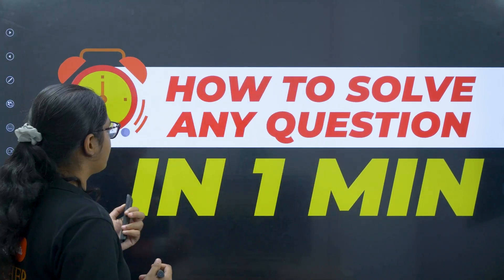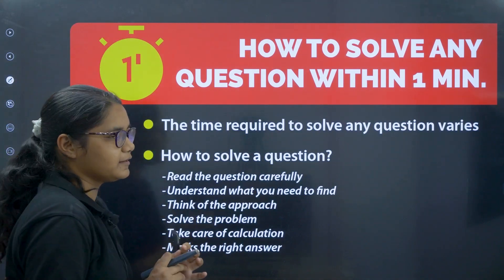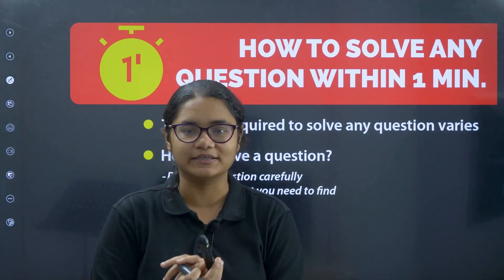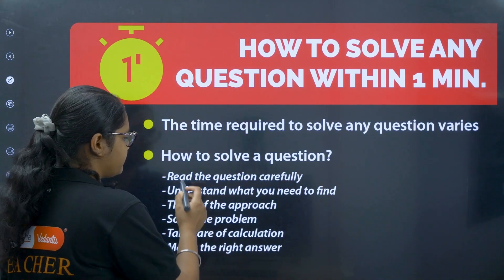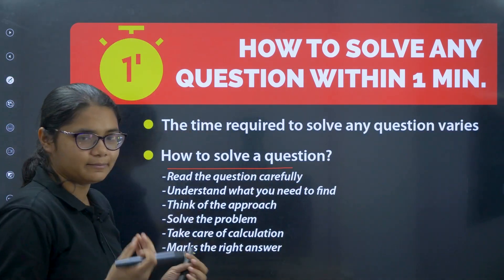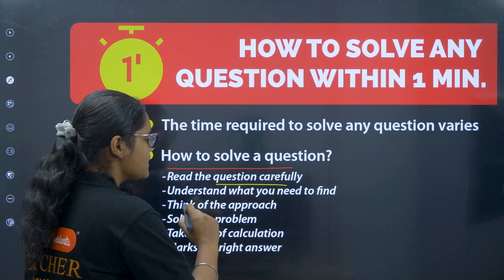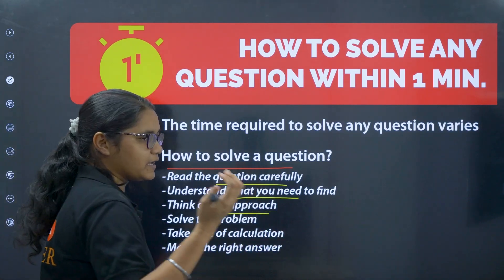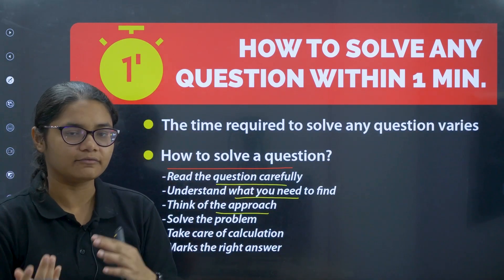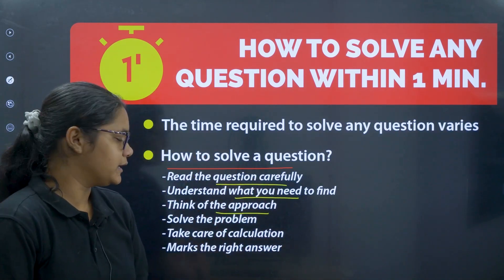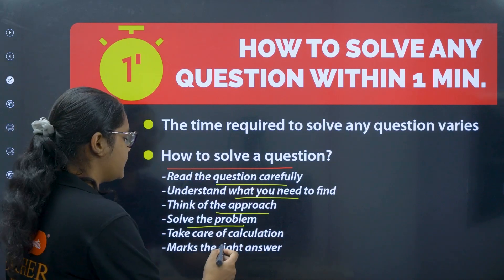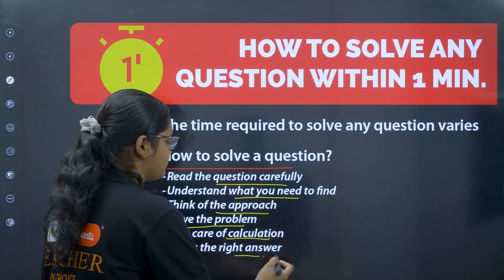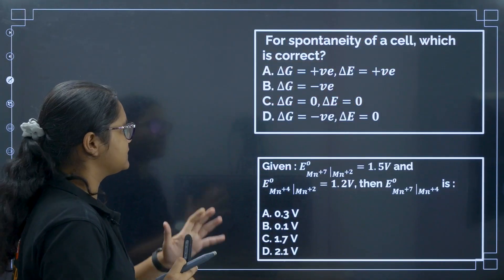One minute per question doesn't mean you distribute time exactly that way — it depends on the question. When solving a question, first read it carefully, then understand what value you have to find. Think of the approach: what formula to use, sometimes an indirect method where you find one value first and substitute it. Then solve using the correct formulas, check your calculation — a calculator is available so avoid mistakes — and mark the correct answer.